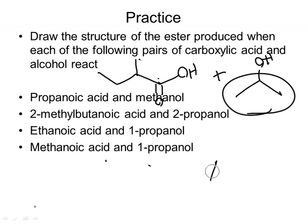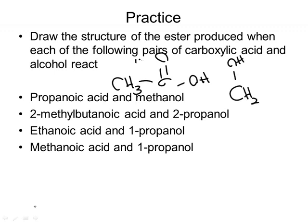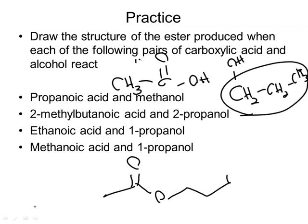The next one is ethanoic acid and 1-propanol. Ethanoic acid is just a two-carbon carboxylic acid, and 1-propanol has three carbons. The three carbons from 1-propanol become these three carbons here, and here's my ethanoic acid portion.